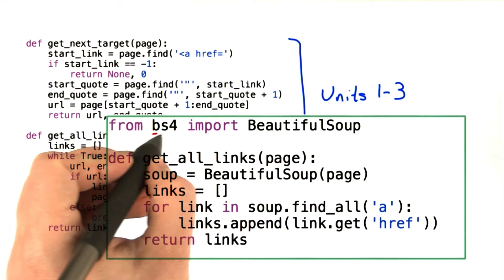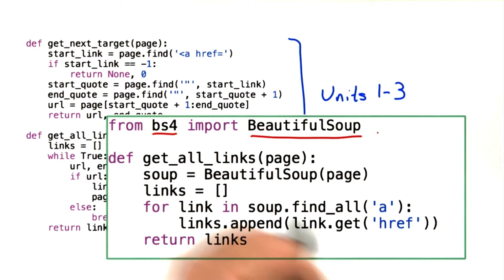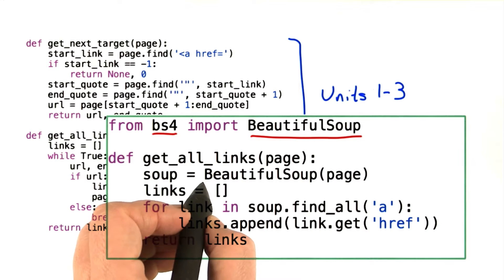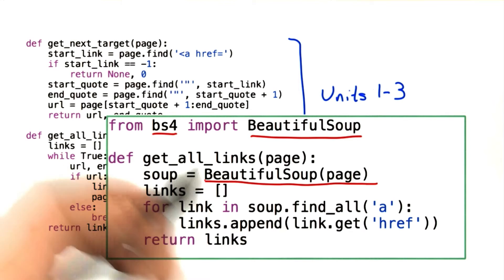We're doing that by importing from BS4, which is the BeautifulSoup library, the BeautifulSoup definition, which allows us to create an object that represents a web page. Here we're passing in the contents of the page just like we were doing in getAllLinks. And the BeautifulSoup module provides definitions that give us a very easy way to extract all the links from a web page.